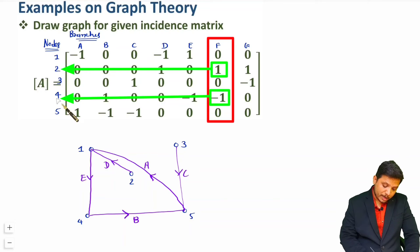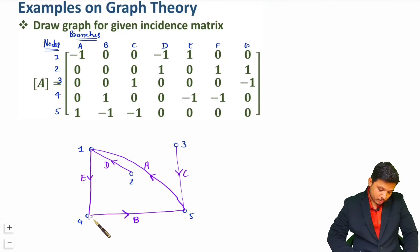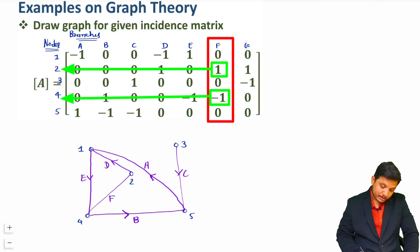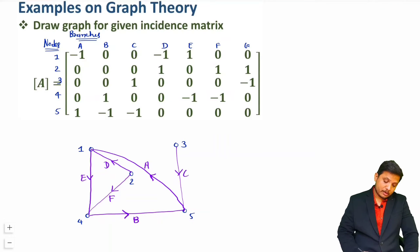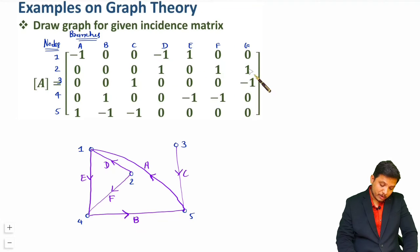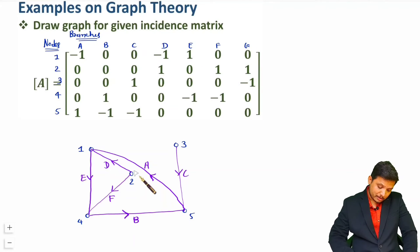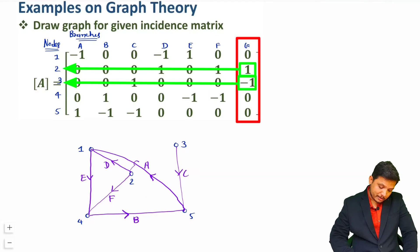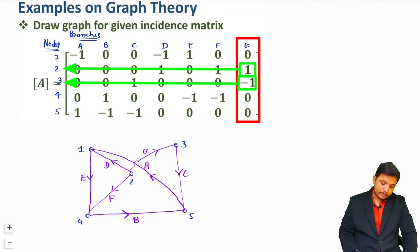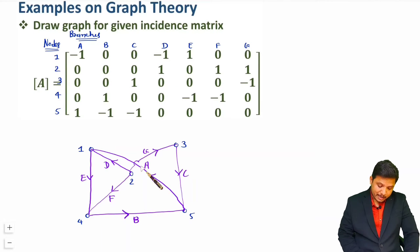Branch F is there in between nodes 2 and 3. Node 2 is having plus 1. Now branch G is also there in between nodes 2 and 3. Node 2 is having plus 1, so direction will be from 2 to 3 — that is branch G. So this is my graph connection for the given incidence matrix.